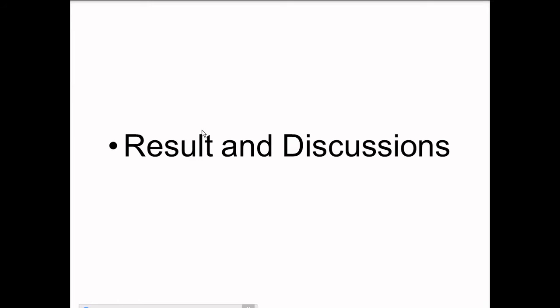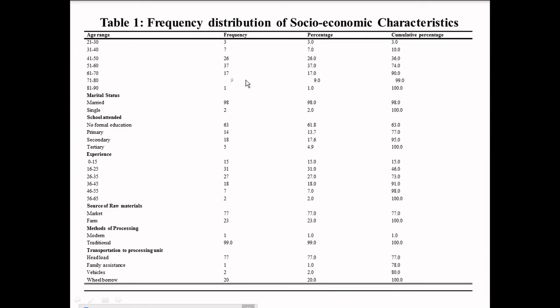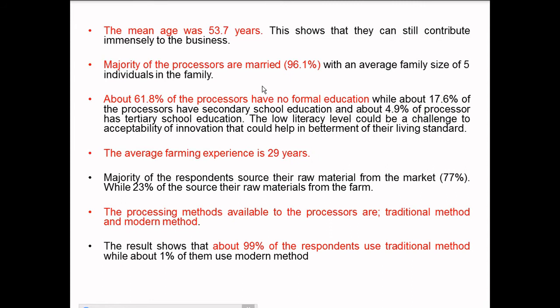Table 1 shows the frequency distribution of socio-economic characteristics of the respondents. From the table, we can see that the mean age was 53.7 years. About 61.8% of the processors have no formal education, and the processing methods available are both local and modern methods, but the majority of processors in the study area used traditional methods.